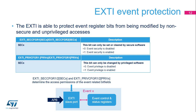Two levels of protection are programmable per event source: security and privileged. At EXTI level, the protection consists in preventing unauthorized write access to change the settings of secure and/or privileged configurable events, change the masking of secure and/or privileged input events, and clear pending status of secure and/or privileged input events. Security violations are reported to the Global TrustZone Controller, or GTZC. The security and privileged configuration can be globally locked after reset by setting the lock bit in the EXTI_LOCKR register.